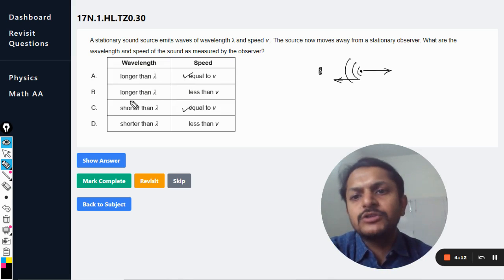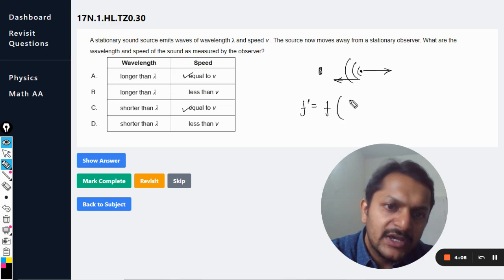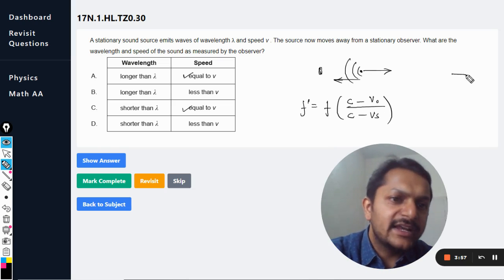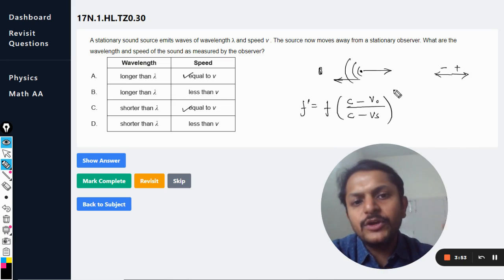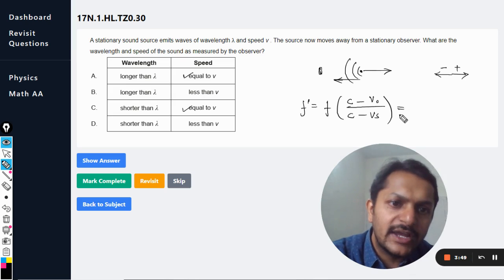Let us think about the wavelength or the frequency. We know that f' is given by (c - velocity of observer) divided by (c - velocity of source). The sign convention is: this direction is positive, this is negative. We are going to substitute the values with the sign convention. So it becomes...